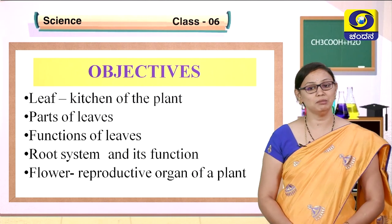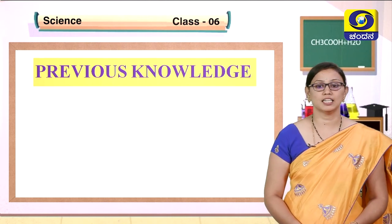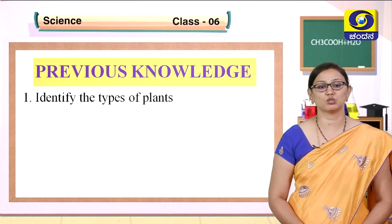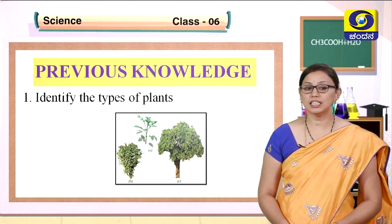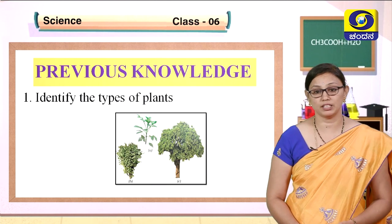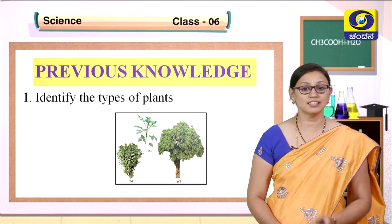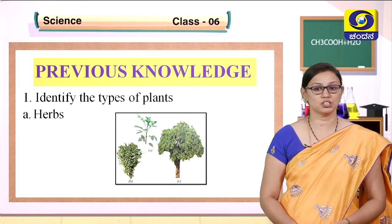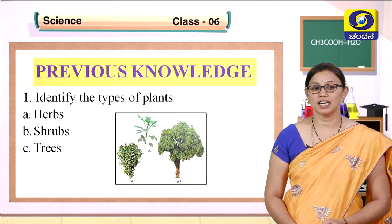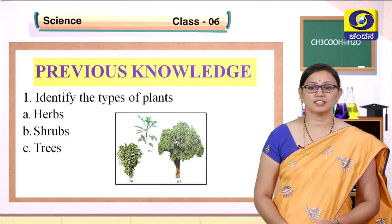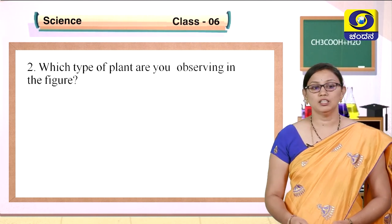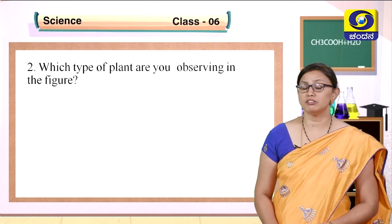Let us recall whatever you learned in session 1. Identify the types of plant, children. Kindly observe and find out which are the different types of plants you see in this picture. Your guess is correct — the first picture A is herbs, the second B is shrubs, and the third picture is a tree. These are the different types of plants classified based on their size.